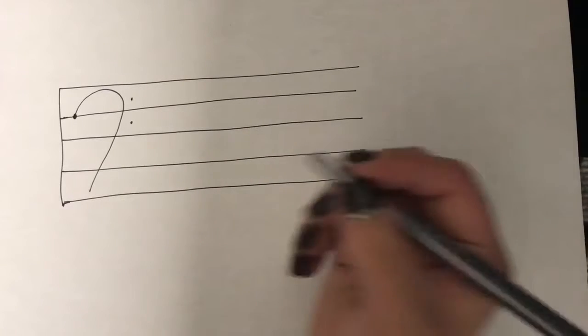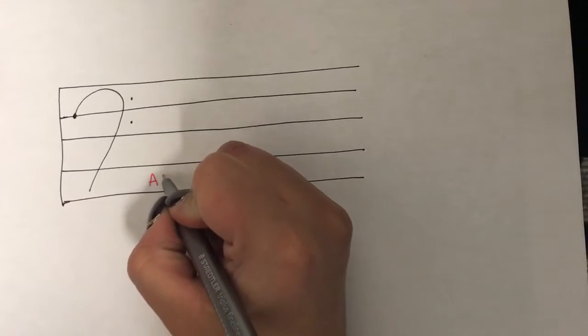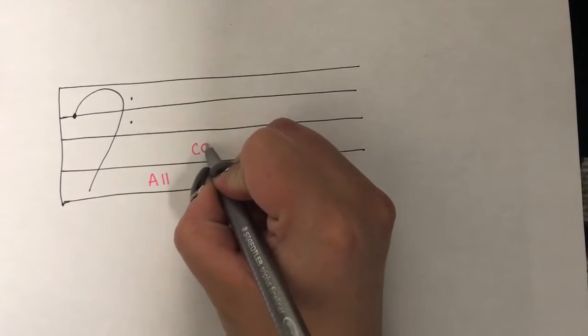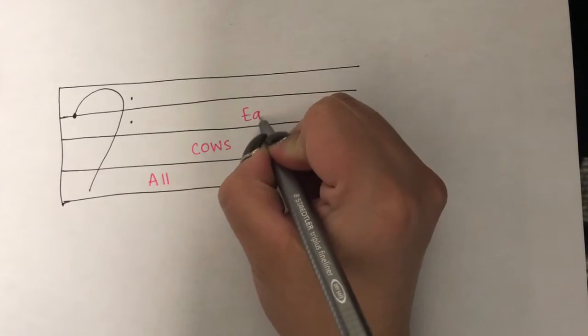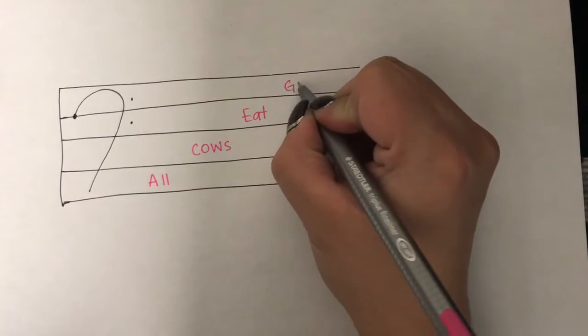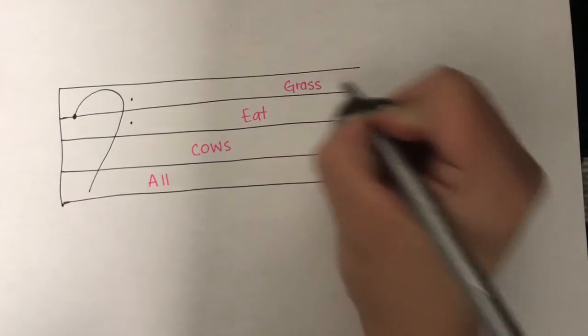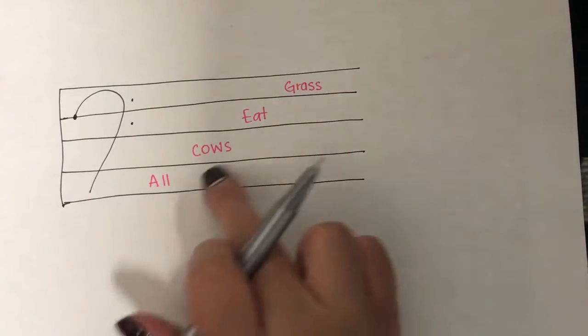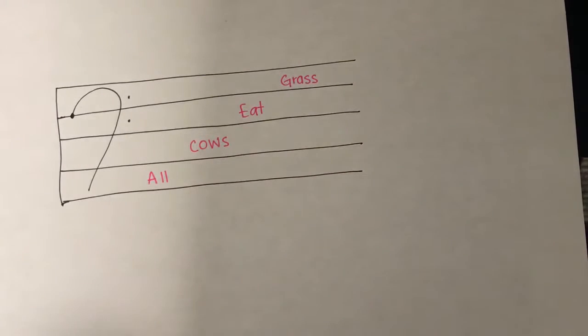All Cows Eat Grass. So this is how we remember the names of the spaces in bass clef. So A, C, E, G, that's for bass clef.